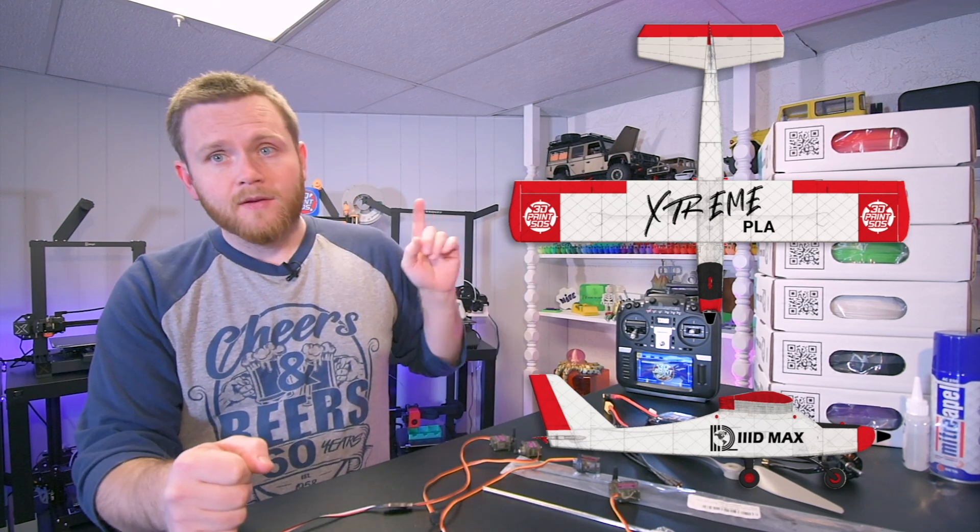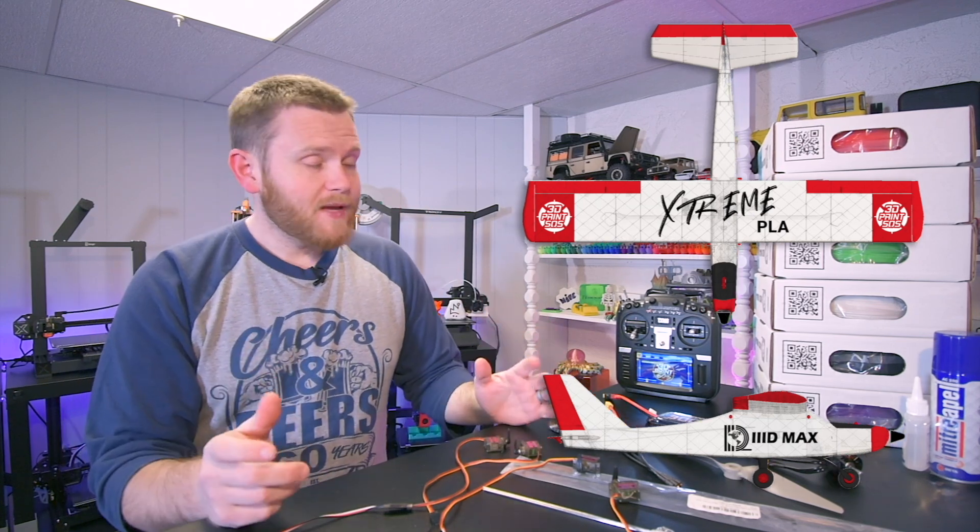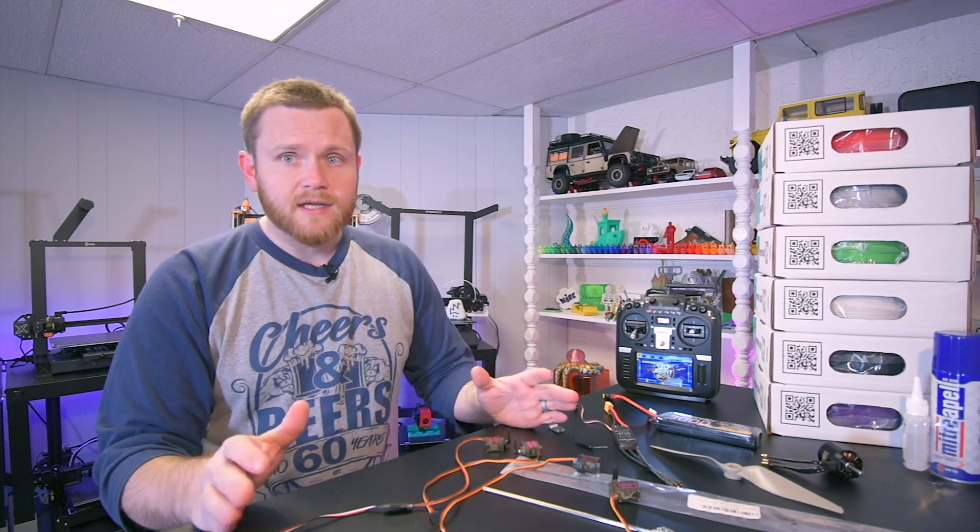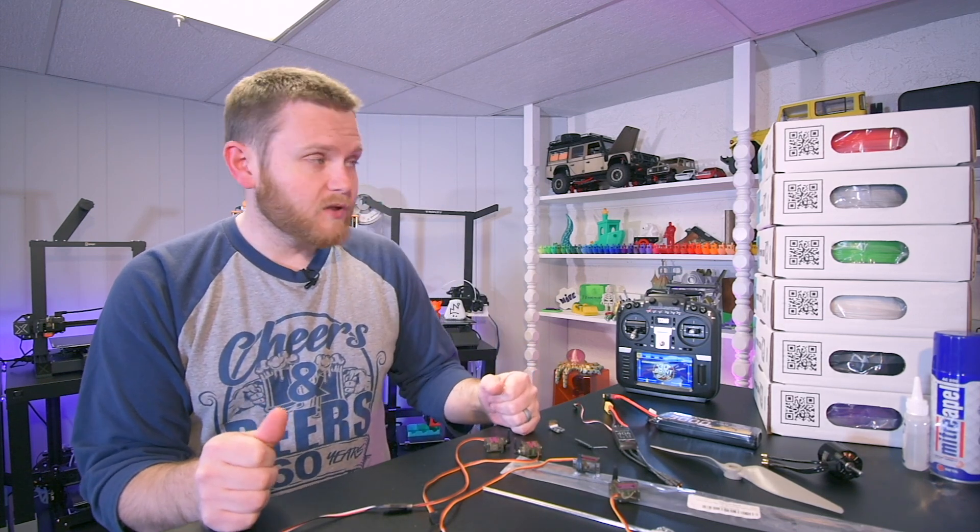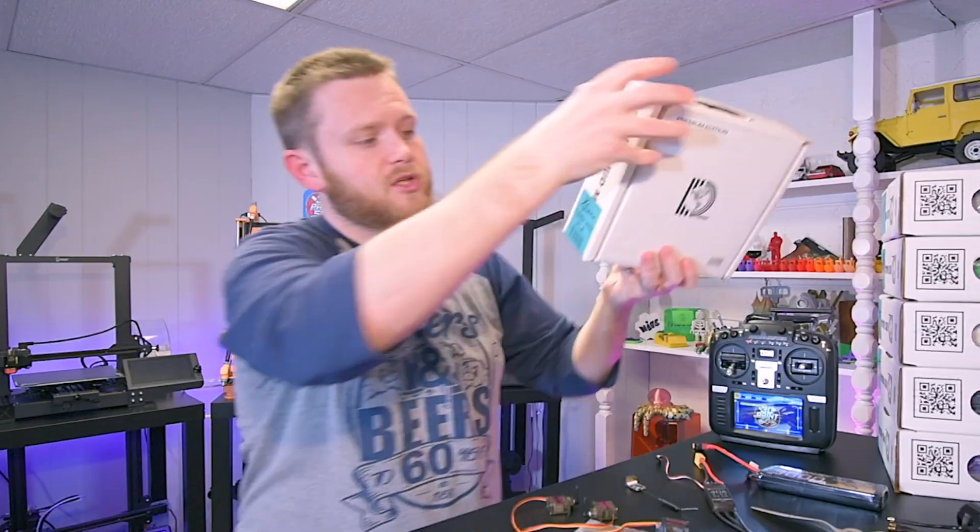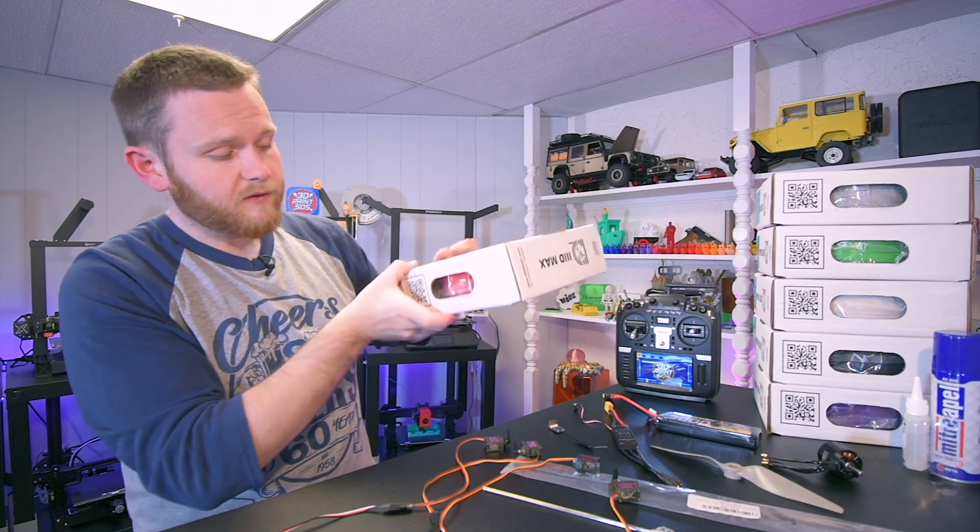But the important part is you see where it says Extreme PLA. That's right. So 3D Max has a brand new filament and it's somewhere in between the regular PLA Plus and their Nano Diamond filament. And it's going to be called Extreme PLA. And these are the colors that they have coming out right now.